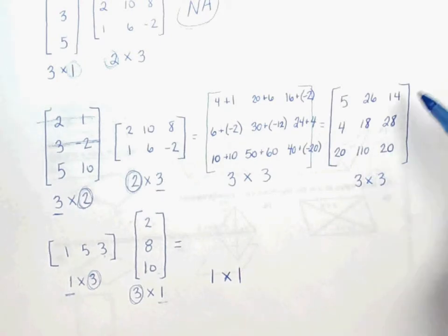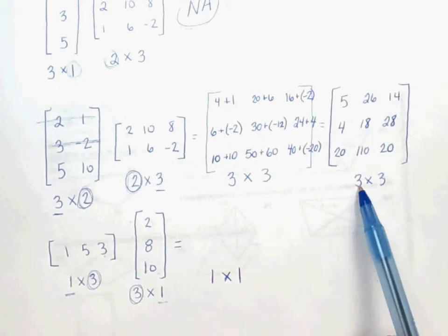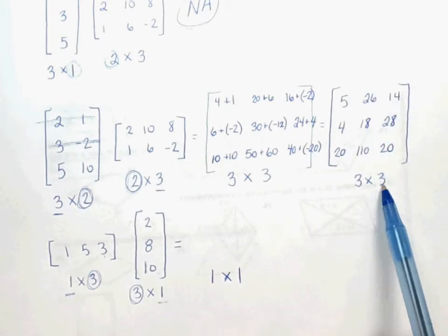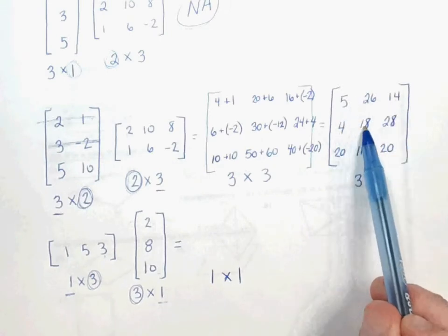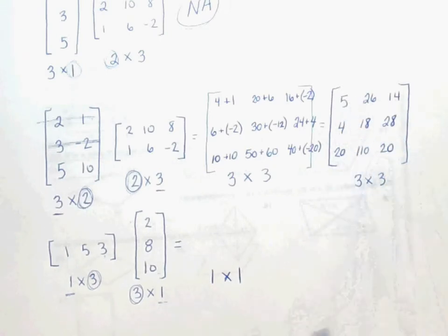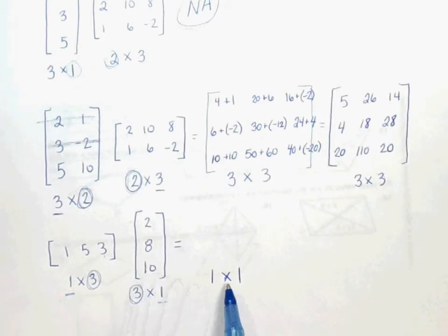Here, we ended up having nine elements. The reason: 3 times 3 is 9. So you go 1, 2, 3, 4, 5, 6, 7, 8, 9. So here, we're only going to end up with one element in our matrix. Let's see how we would get that. We're going to still use our finger maneuver.